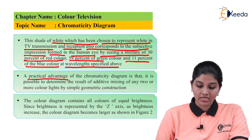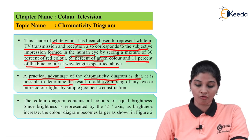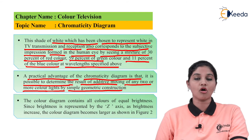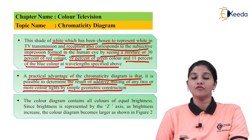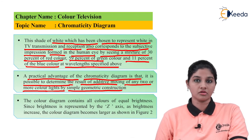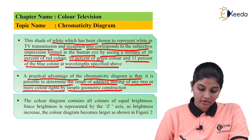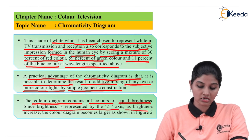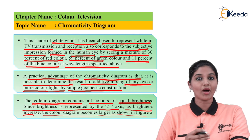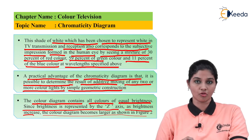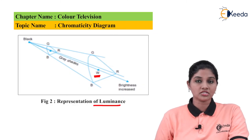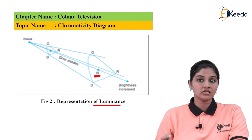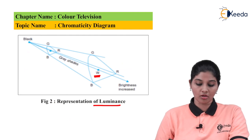A practical advantage of the chromaticity diagram is that it is possible to determine the result of additive mixing of any two or more colored lights by simply geometric construction. Rather than performing actual mixing, with the help of the chromaticity diagram we can get a direct idea about the result. The color diagram contains all colors of equal brightness, since brightness is represented by the Z-axis — and as brightness increases, the color diagram becomes larger.